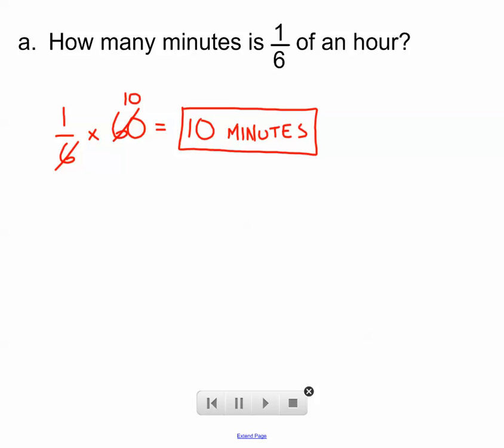And then we can just go 1 times 10 is 10. So 1 sixth of an hour is 10 minutes. Again, 6 goes into 60 ten times. 1 times 10 is 10.